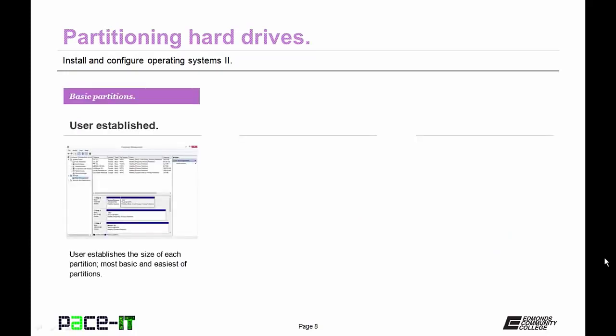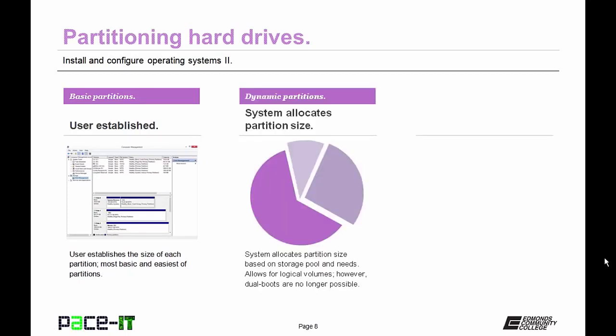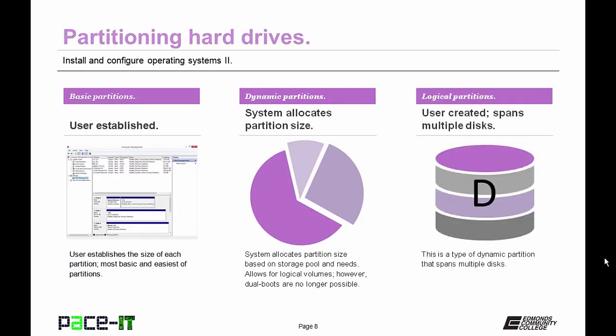There are three basic types of partitions. The basic partition is where the user establishes the size — the most basic and easiest. The dynamic partition is where the operating system decides how much space is needed and can increase and decrease as needs arise and fall. The logical partition spans multiple disks and is a type of dynamic partition.